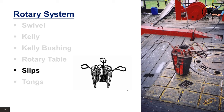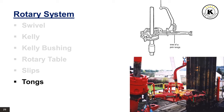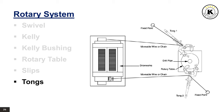Tongs are a special type of spanners used to break out or tighten pipe connections. One tong, called backup, is attached to the drill pipe and anchored to the derrick structure by a chain. The other is attached to the connected pipe box or saver sub and connected via chain to the cat head of the drawworks. The rotation power of the drawworks is used to break out or tighten the connection. On most modern rigs, hydraulic power tongs are used instead — they are self-operated, able to break out connections without chains, and are safer devices.